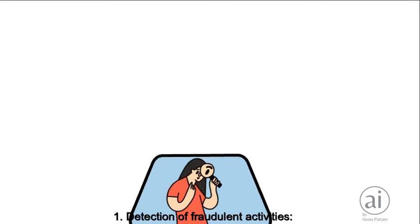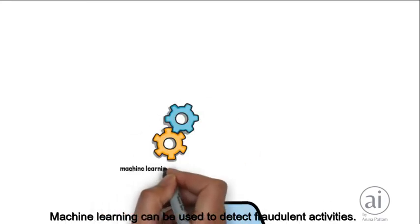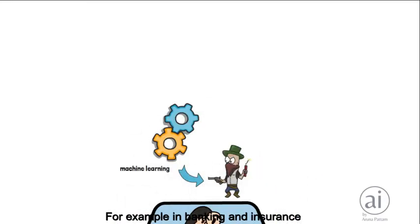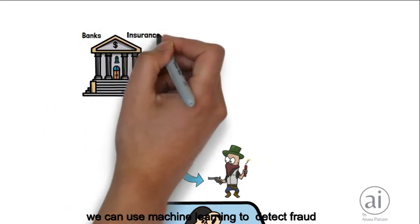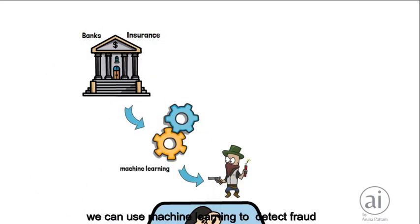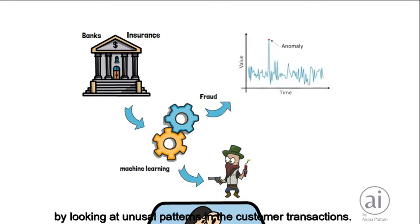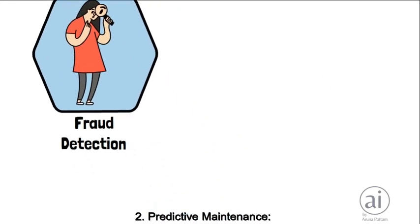Detection of fraudulent activities: machine learning can be used to detect fraudulent activities. For example, in banking and insurance, we can use machine learning to detect fraud by looking at unusual patterns in customer transactions.